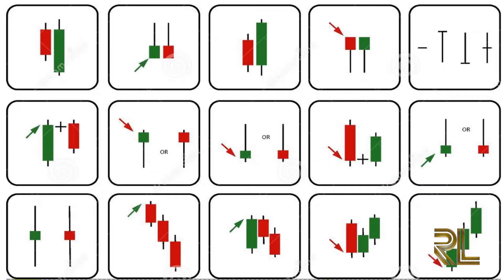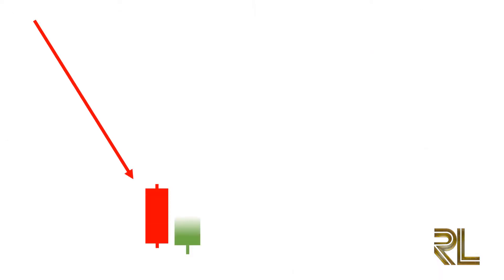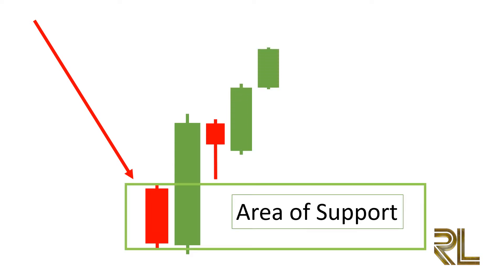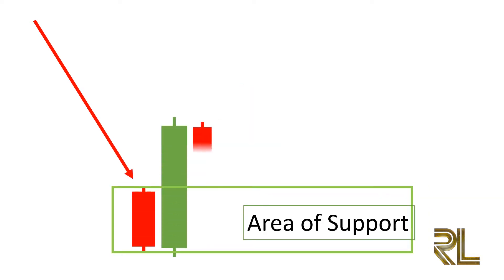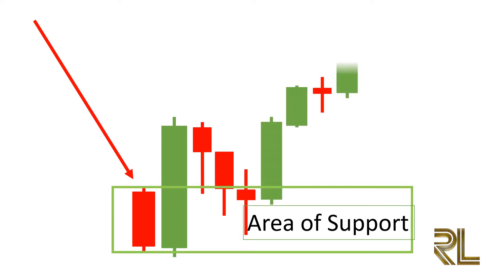Reversal candlestick psychology is one of the reasons why reversal patterns are such effective predictors of price reversals. Here's an example: we see the bullish engulfing pattern has formed and the market is moving up. All the previous sellers from the bear candlestick are now at a paper loss and will be looking to exit their positions at breakeven, forming an area of support. If prices move back down into the range of the bearish candlestick body, the previous sellers will quickly buy or close their trades.